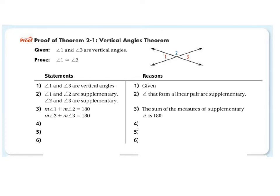The sum of the measures of supplementary angles is 180. Since both expressions equal 180, by the transitive property we know they are equal to each other. We can say the measure of angle one plus the measure of angle two equals the measure of angle two plus the measure of angle three — because they're both equal to 180, they're equal to each other.